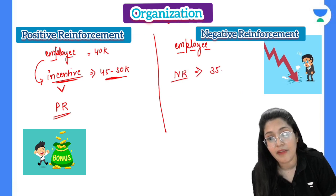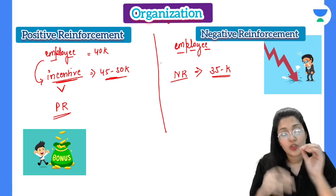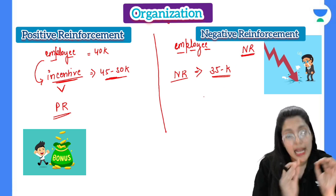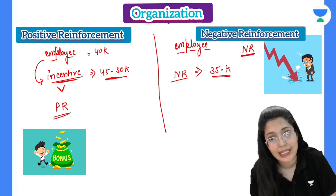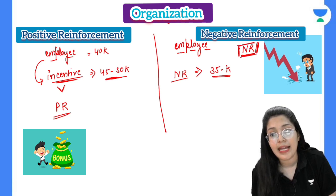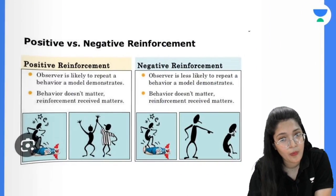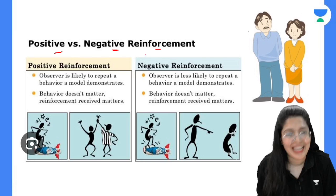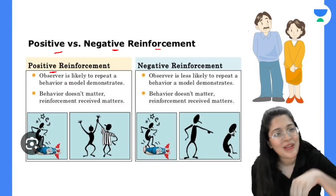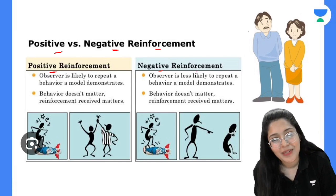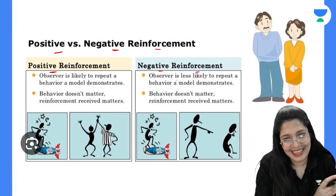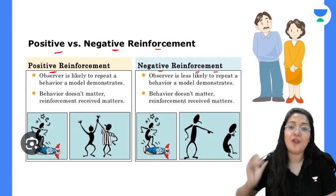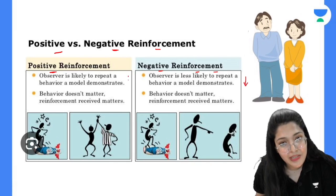On the other hand, when an employee performs poorly and does not complete tasks, negative reinforcement is applied — their salary is deducted, say down to 35,000. This is done to stop the consequences of their negative performance. Negative reinforcement is used to stop the behavior so that it is not repeated. In positive reinforcement — repeat the good work; in negative reinforcement — do not repeat the bad work. This is how the theory works.